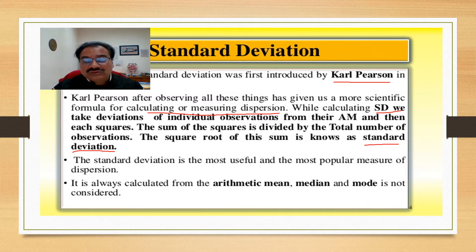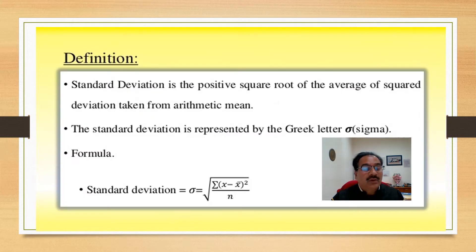The standard deviation is the most useful and the most popular measure of dispersion and it is reliable and realistic. Often in all the sectors, people always use this deviation. It is always calculated from the arithmetic mean; median and mode are not considered.